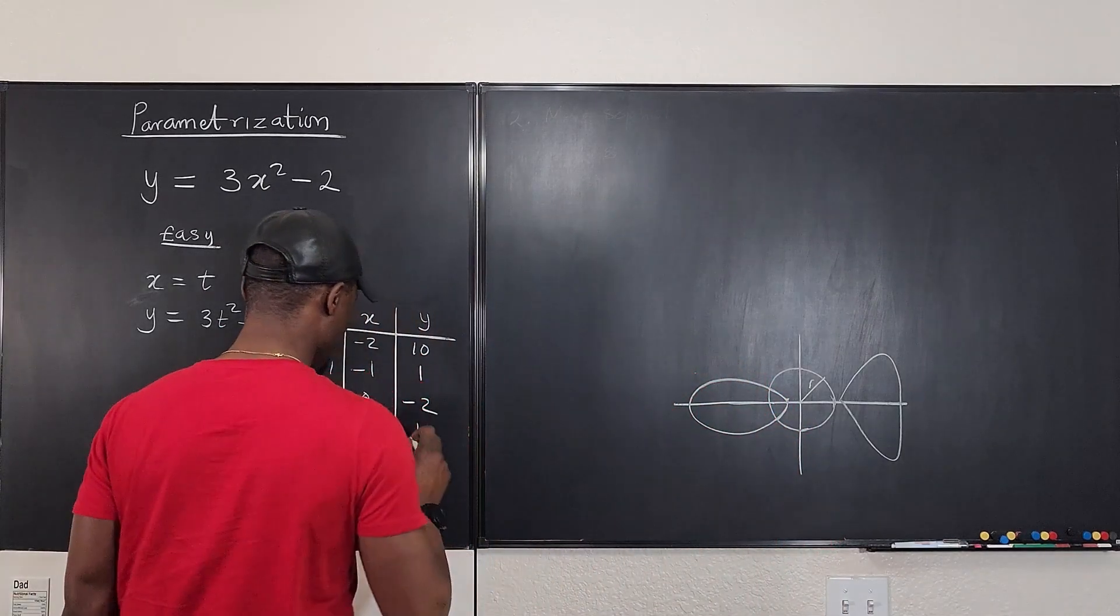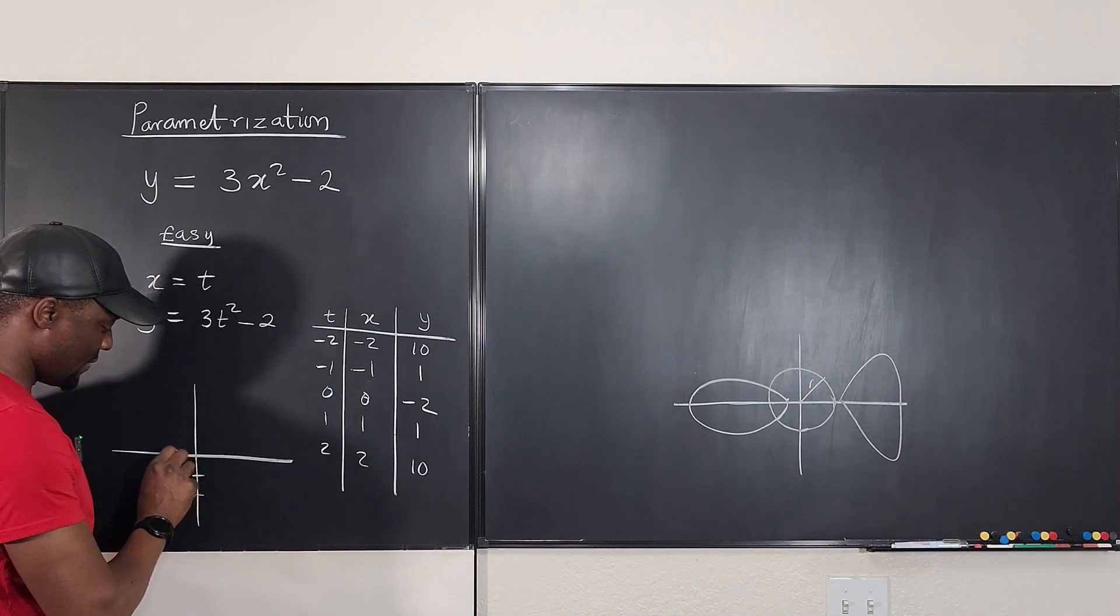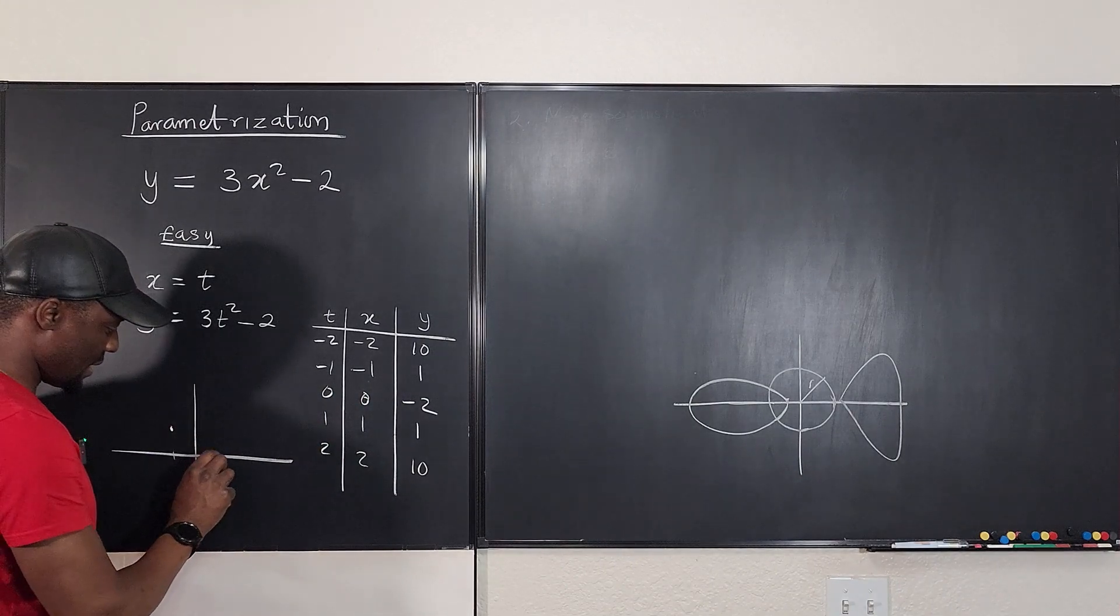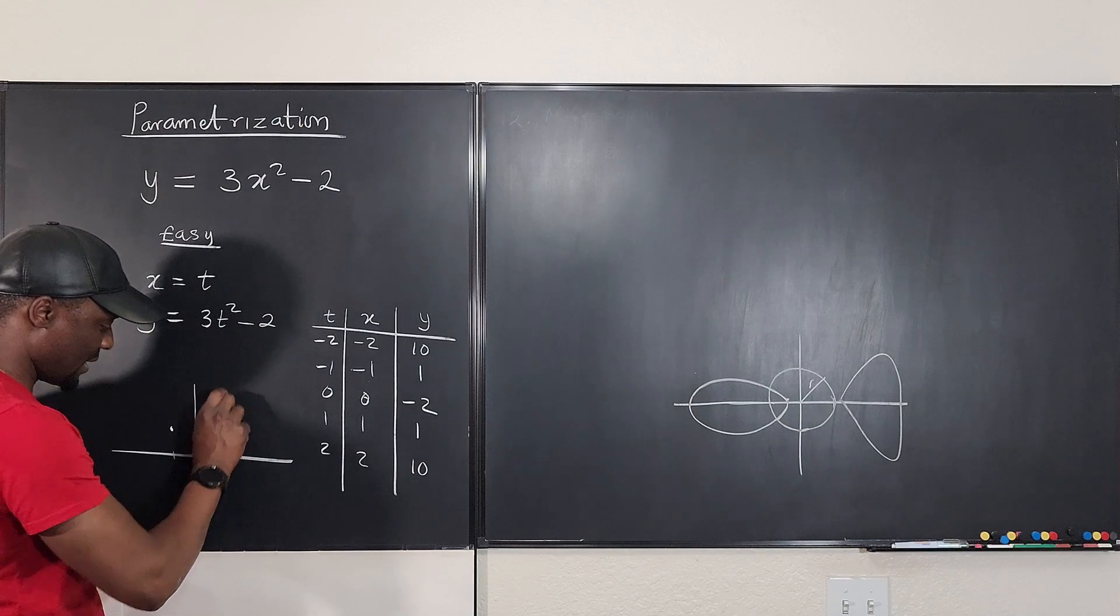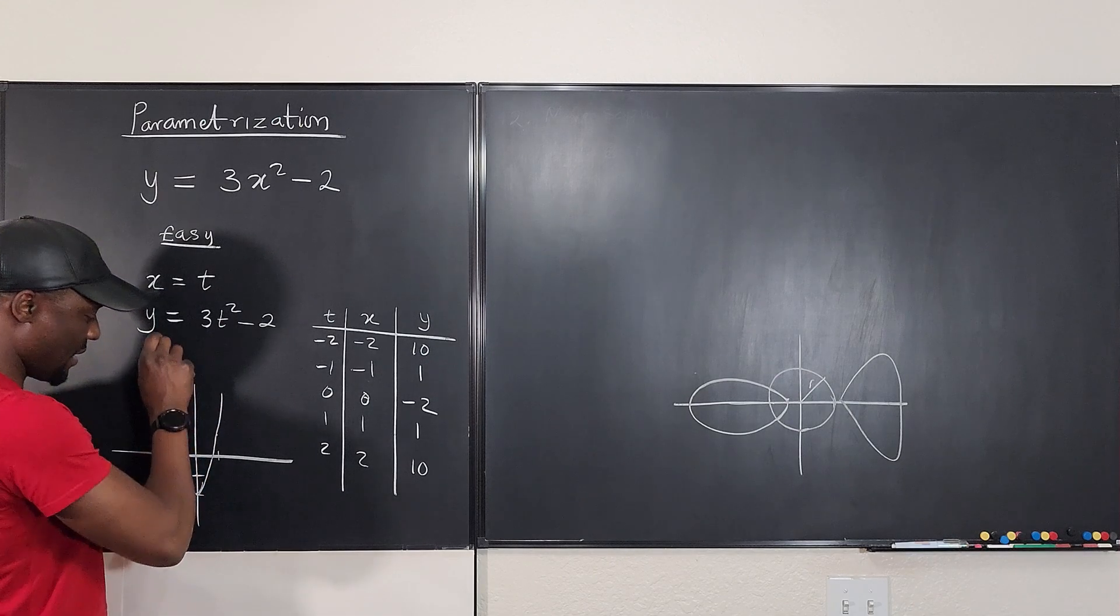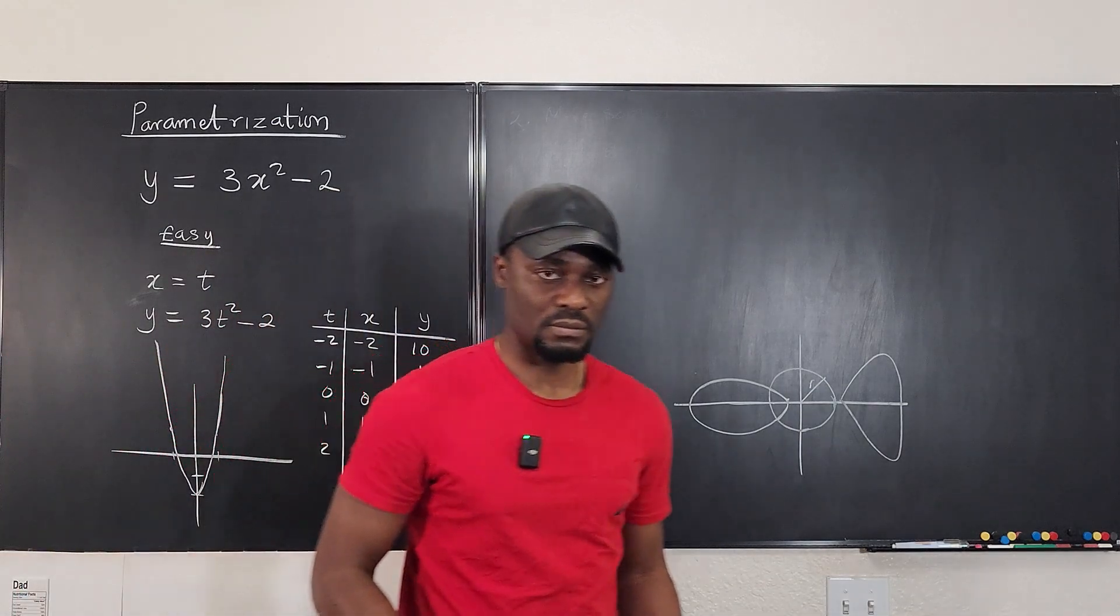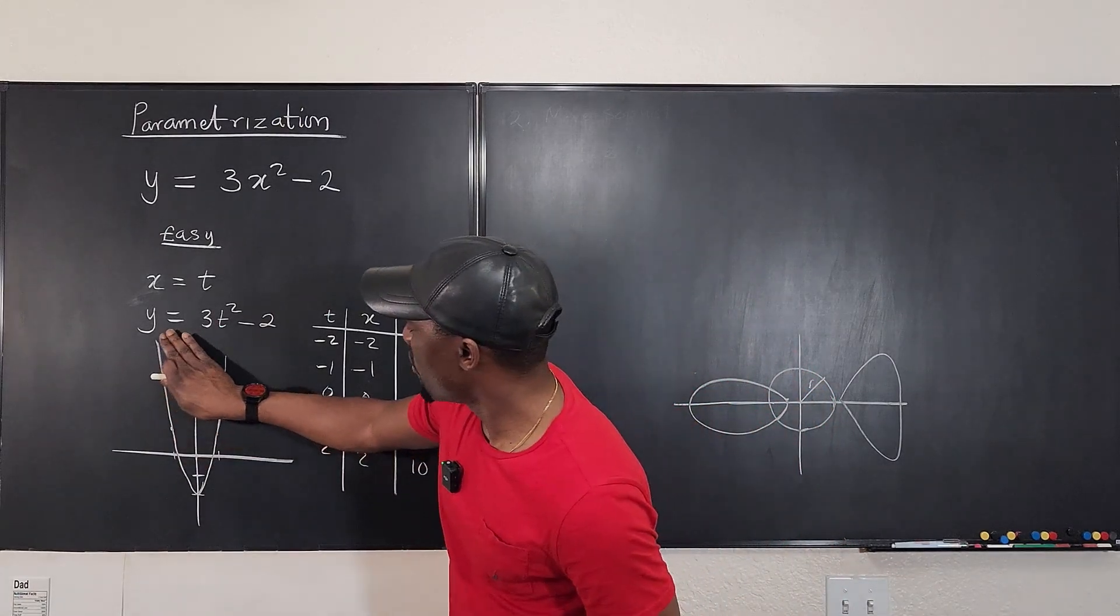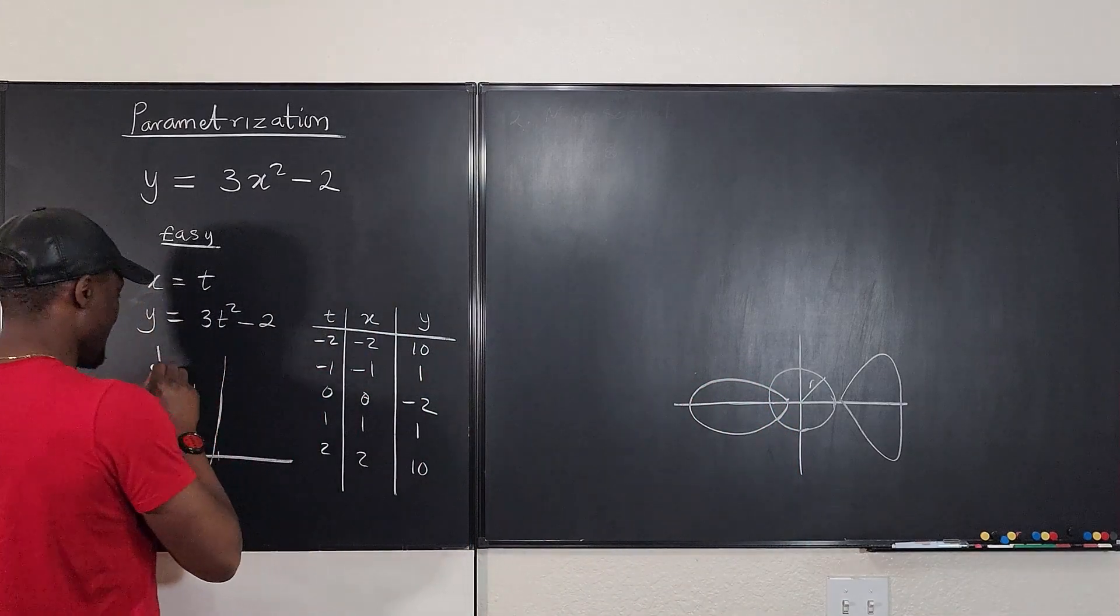So when you parameterize this easy way, you always have x and t going in the same direction. So here, as t is going in this direction, x is going in this direction, and this is what you have. So you have a curve that goes something like this. This is the parameterized form. And in what direction is it still going? We said it's going from left to right, so you have to put your arrows here.